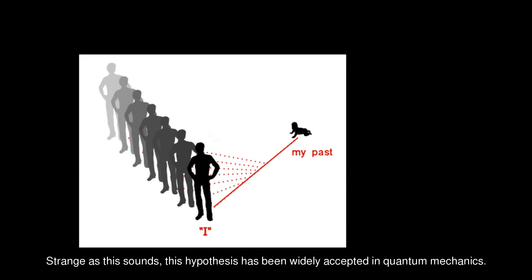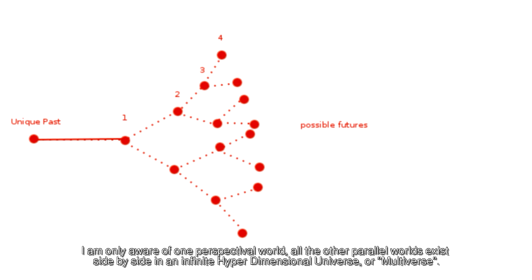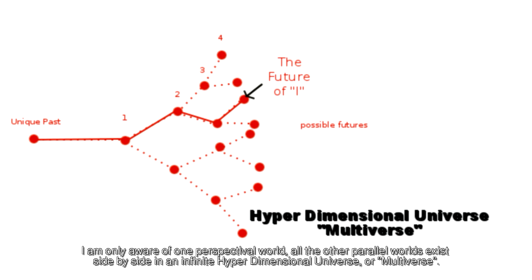Strange as this sounds, this hypothesis has been widely accepted in quantum mechanics. We can infer that anything that can happen, will happen in another parallel world. For every possibility at any moment in time, the timeline splits into a new world based upon this outcome of this possibility. I am only aware of one perspectival world. All the other possible parallel worlds exist side by side in an infinite hyper-dimensional universe or multiverse.